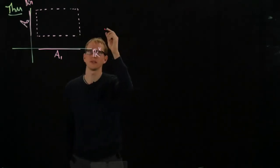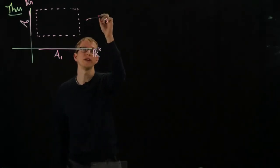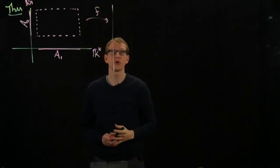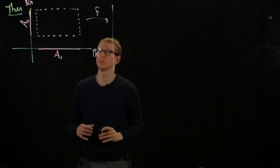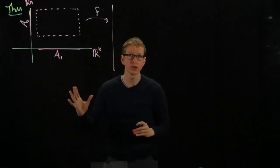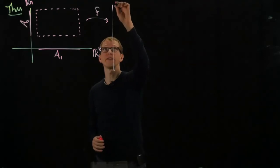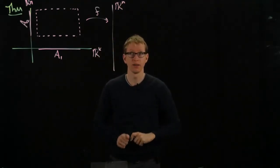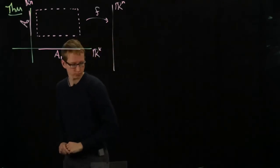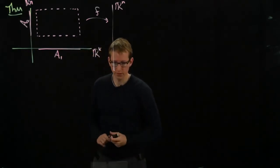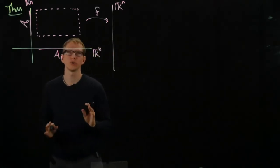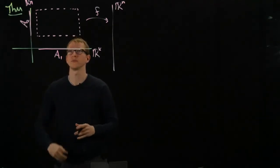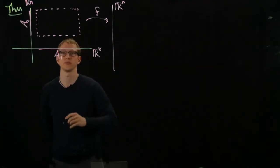And the setup is we still have this function f. But this time, the codomain of this function is not just going to be rm, but it's also going to be rn. It's the only difference so far between the two setups.